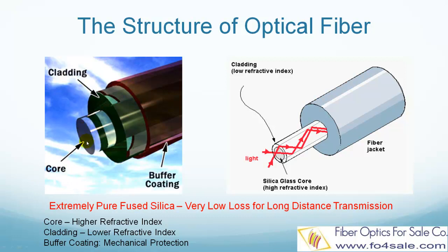Core has higher refractive index. Outside of core is the cladding layer. Cladding layer has lower refractive index than the core. The third layer is a plastic buffer coating. This buffer coating layer doesn't affect the fiber's optical performance. It is there for mechanical protection only.